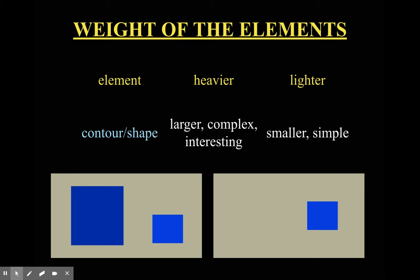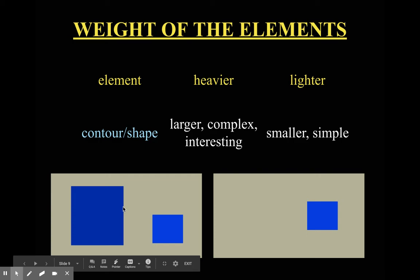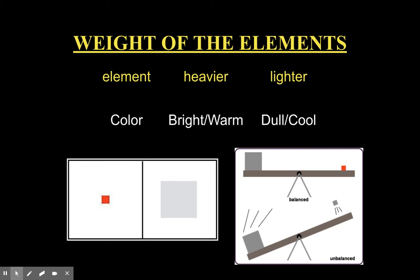It's the weight of the elements that creates visual weight. For contour and shape: larger, complex, and interesting shapes carry more visual weight, while smaller and simpler shapes carry less. You can see how a big square on one side outweighs a smaller one. Something more interesting and complex can outweigh something simple.